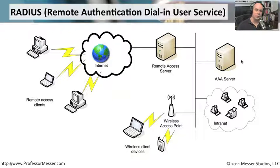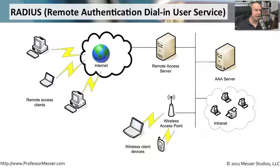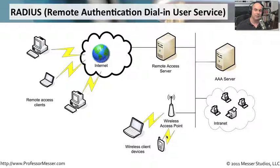RADIUS usually uses UDP over port 1812 by default. The AAA server checks your username, password, and any two-factor authentication information. If everything is legitimate, it logs you in and records when you entered the network, and also when you log off. This centralized process works the same whether you're coming in remotely, as a wireless client, or on your local intranet — everyone uses the same username and password.